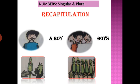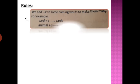Parrot and parrots. Parrot means singular — one. And parrots means plural — many. Based on these, we learned two to three rules on how to make one into many. This is your first rule: we add S to some naming words to make them many. For example, card → cards, animal → animals. When we want to make a word singular to plural, we add S at the end of that naming word.